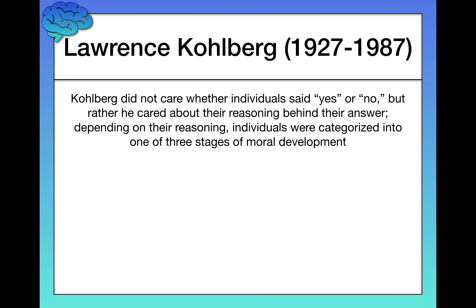Kohlberg did this with people of all ages, so you can assess as an adult where you fall. You can also tell the Heinz dilemma to a child or adolescent and see where they fall. So let me walk you through the different stages and the levels within each — three stages, two levels within each stage, six levels total.